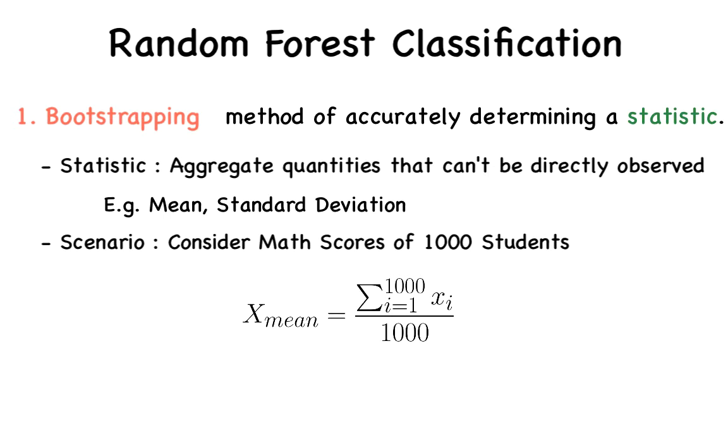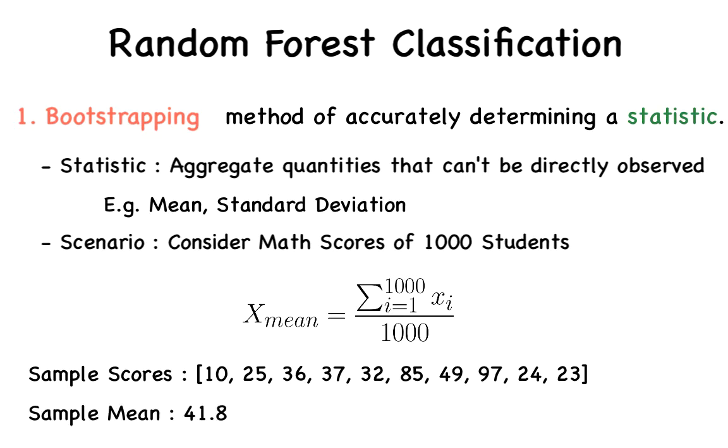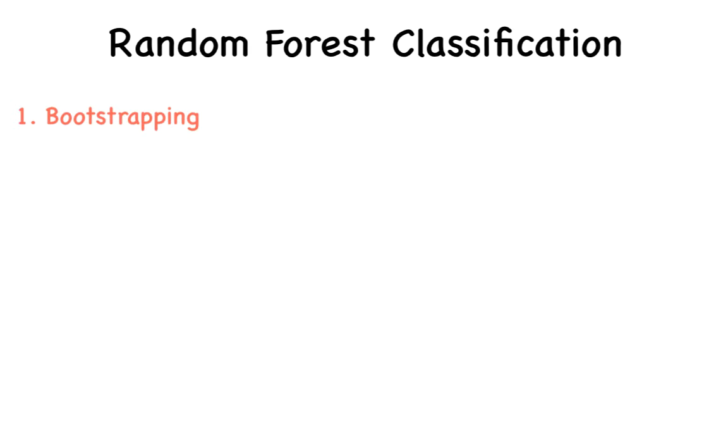Say we have the test scores of 10 students as 10, 25, 36, 37, 32, 85, 49, 97, 24, and 23. Wow, this class is pathetic. Then the sample mean would be 41.8, using the formula just mentioned. To compute the mean using bootstrapping, we would perform the following steps.